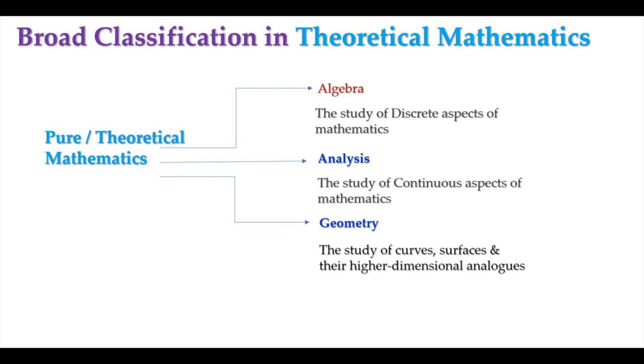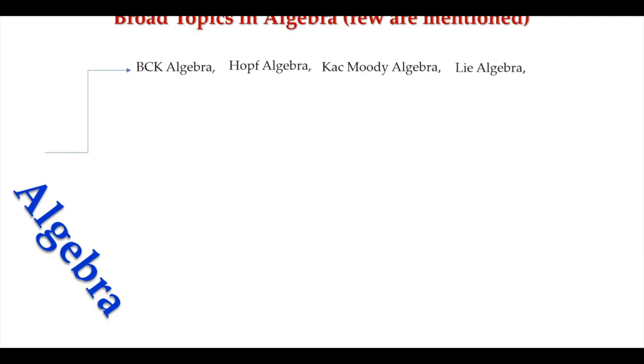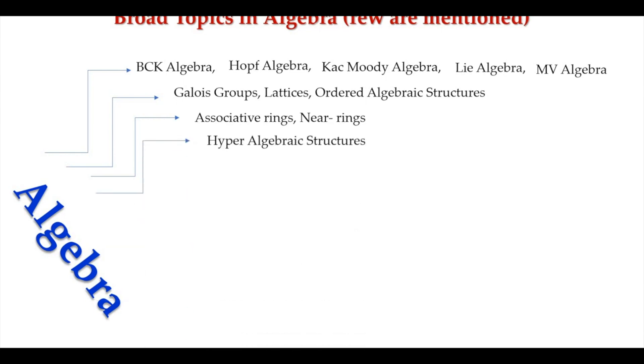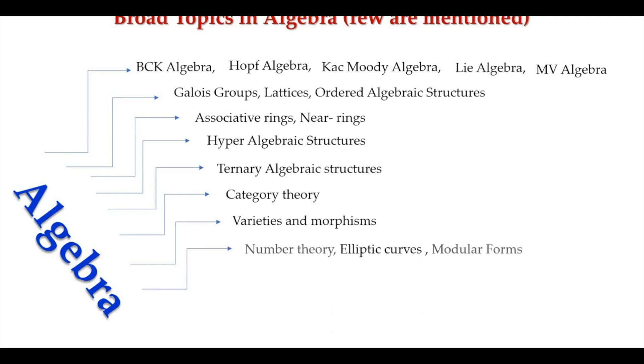Now we will see a few topics in each of them. First, we are going to mention very few in each category. In algebra, you can have BCK algebra, BCI algebra, Kac-Moody algebra, Lie algebra, MV algebra, Galois groups, lattices, ordered algebraic structures, associative rings, near rings, hyper-algebraic